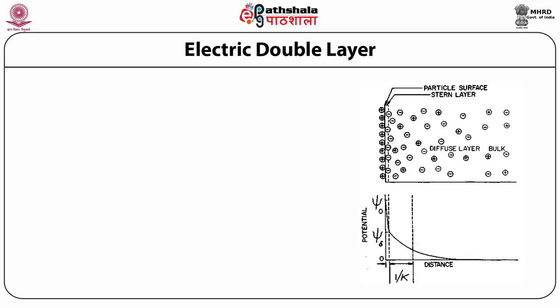Formulation of suspension necessitates the use of ionic surface active agents as suspending agents. The surface active agents are oriented at the interface so that the charged groups form the outside surface. The presence of charge at an interface has a profound effect on the nature of the interfacial region. A layer of opposite charge ions is sufficiently held together by the charged surface so that the ions move with the surface. This particular layer is known as the Stern layer.